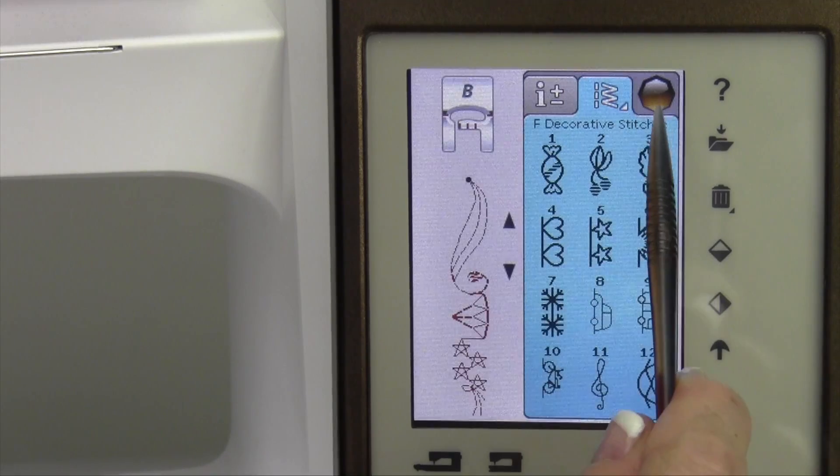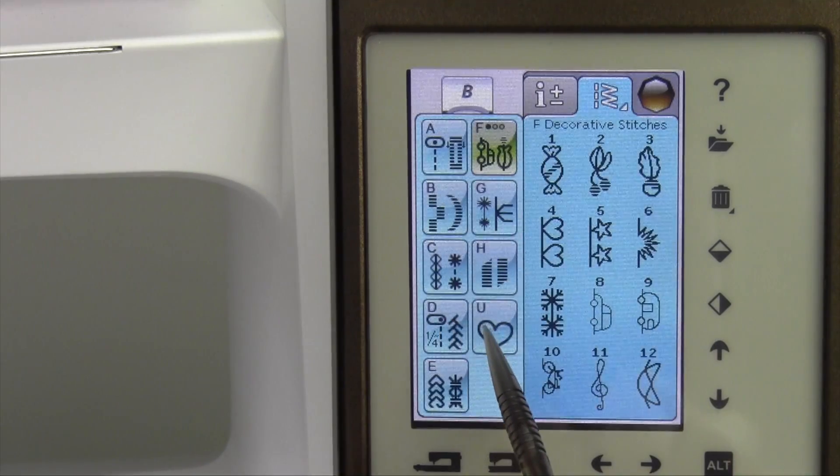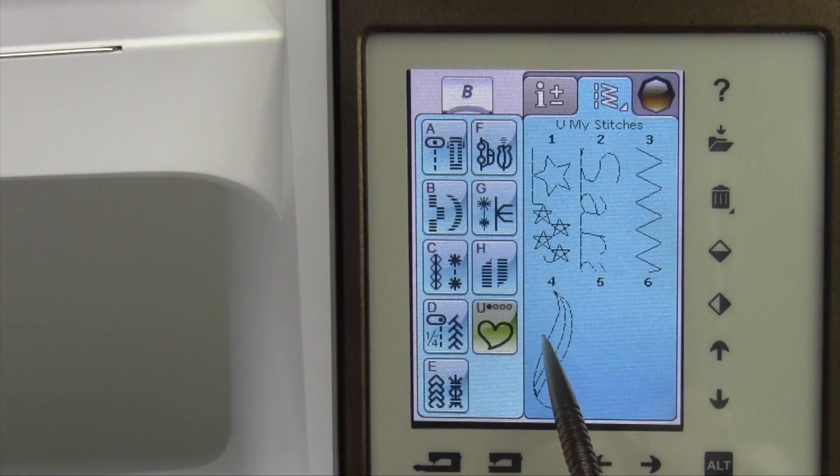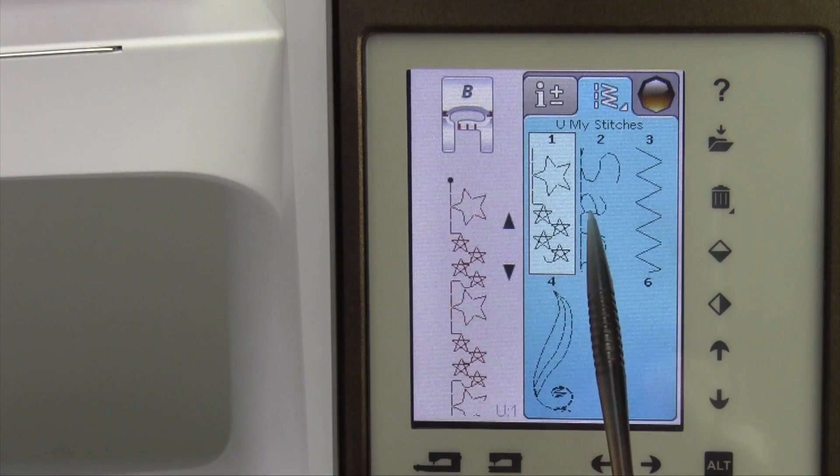Anytime you go to the menu of U, those will be right at your fingertips. When you touch them, they'll come right on up, and they're ready to stitch.